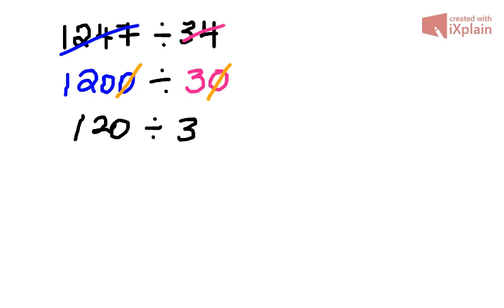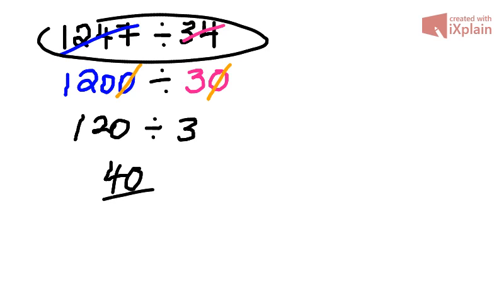And here we can basically think: 3 into 12 goes 4 times, but because this is 120, 3 into 120 will go 40 times. So our estimate is 40. This is not the final accurate answer of that division, but it's our estimate, so it could be in the house of 40, 50, 30, but certainly not in the hundreds like 400 or 300.